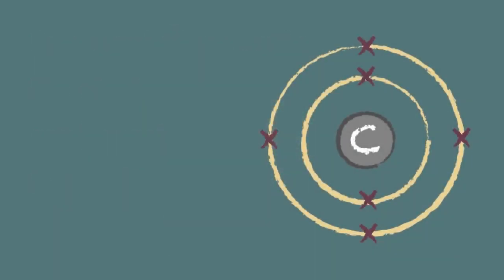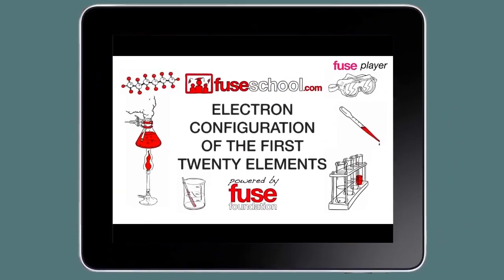The answer is that it would be written 2.4. And now that you have covered the basics of drawing electron configurations, you'll be ready to tackle our lesson, Electron configurations of the first 20 elements.